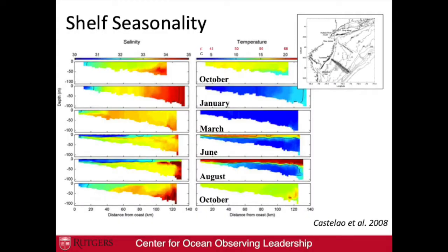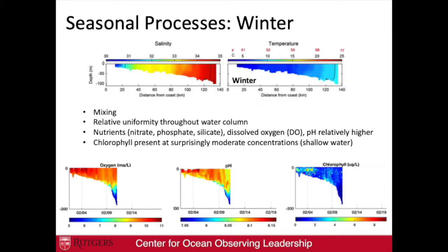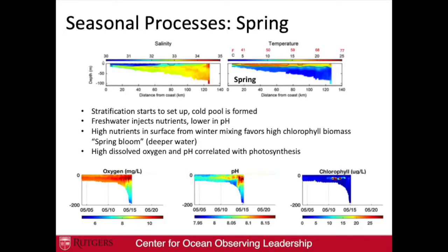This is the seasonality of the cold pool. We're looking at salinity and temperature across a cross-shelf transect, with distance from the coast at the bottom. These are vertical profiles in different months. In October, or fall, you get the breakdown of the cold pool — it's pretty uniform vertically. In winter it's cold and well-mixed. Moving into spring, you start seeing freshwater runoff and thermal stratification setting up, getting warmer at the surface. In summer, you see that strong stratification layer, which then breaks down again in fall.